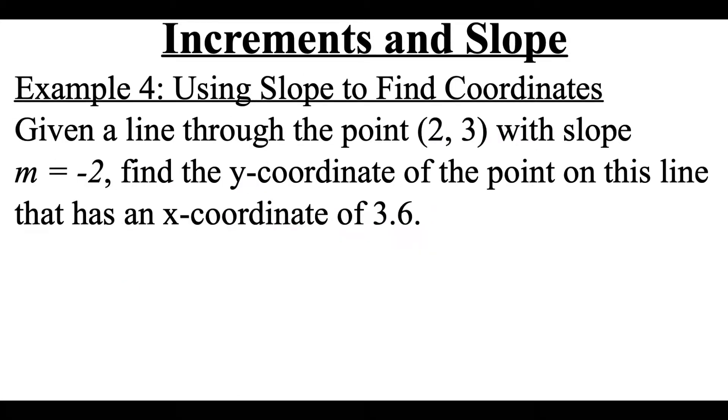Now this example is a little bit different. We're given a line that goes through the point (2, 3) and it's got a slope of negative 2. We know that it has somewhere along the line an x coordinate of 3.6, but we want to find the associated y coordinate that goes with that x value of 3.6. So if we think about how we're calculating this slope, that change in y, we took the ending y value minus the initial y value, and what we don't know is that ending y value.